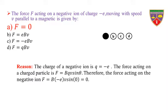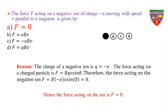Reason: The charge of a negative ion is Q = −e. The force acting on a charged particle is F = BQV sinθ. Therefore, the force acting on the negative ion is F = B × (−e) × V × sin 0° = 0. Hence, the force acting on the ion is F = 0.